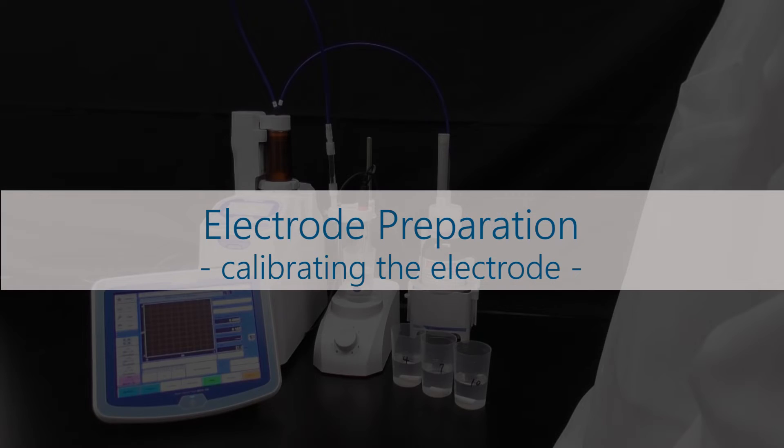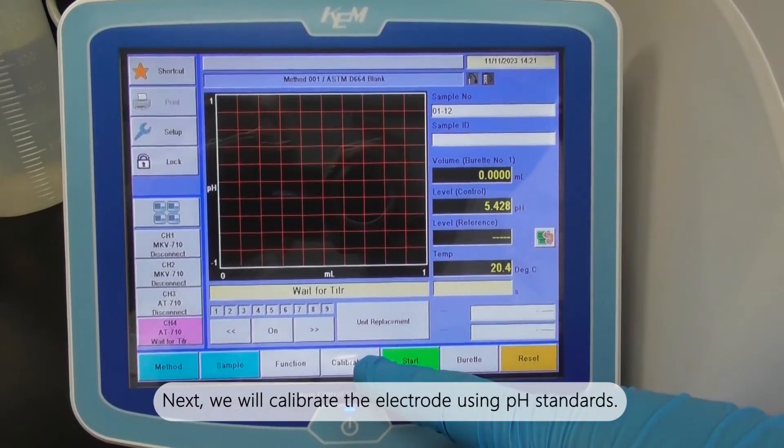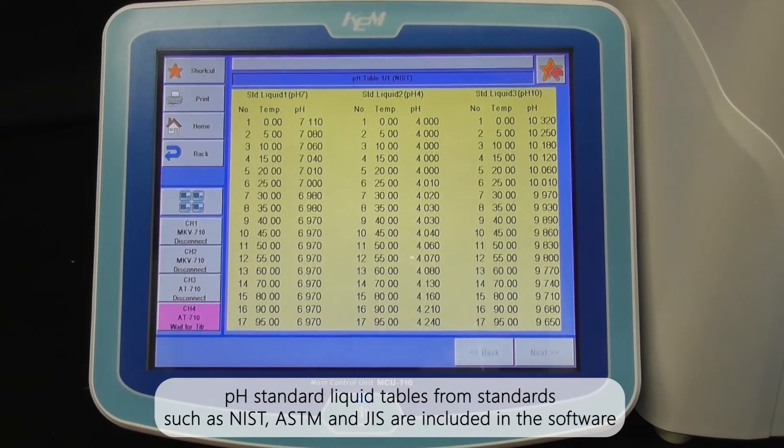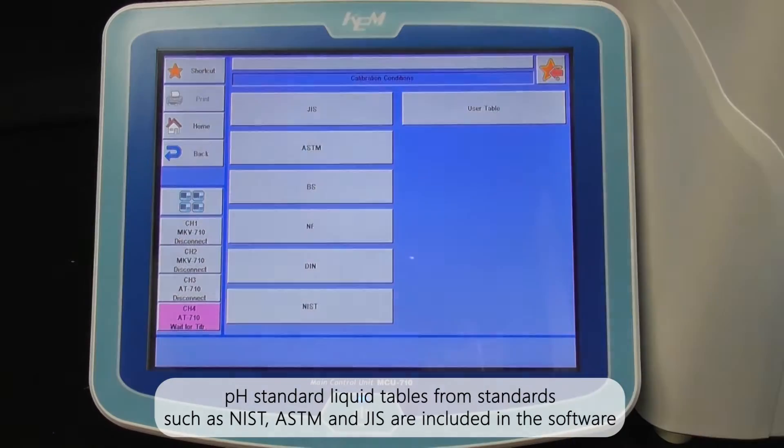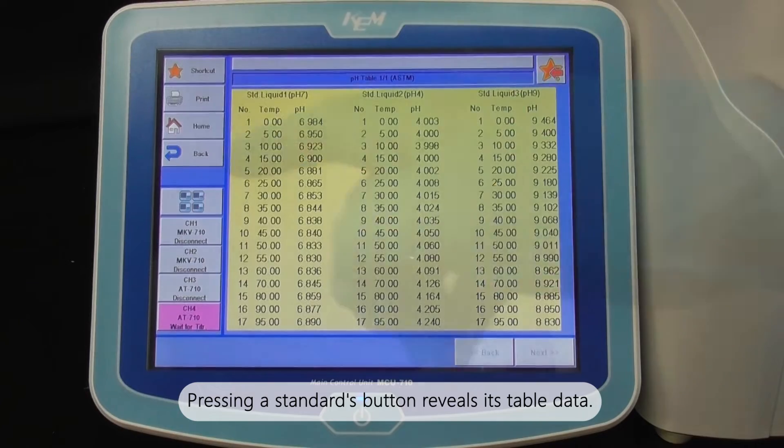Electrode preparation: Next, we will calibrate the electrode using pH standards. pH standard liquid tables from standards such as NIST, ASTM and JIS are included in the software. Pressing a standards button reveals its table's data.